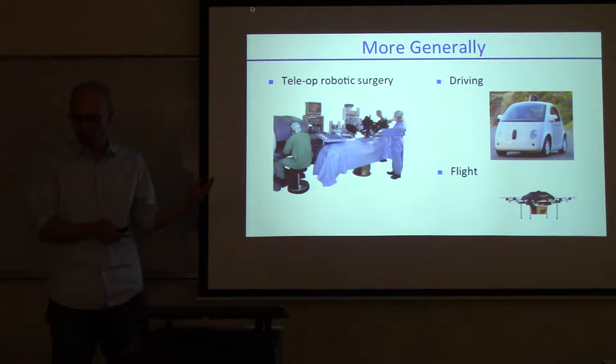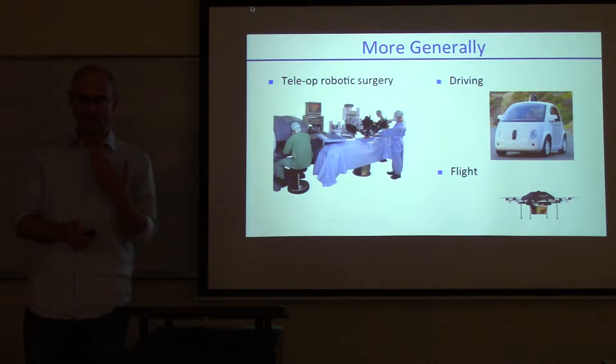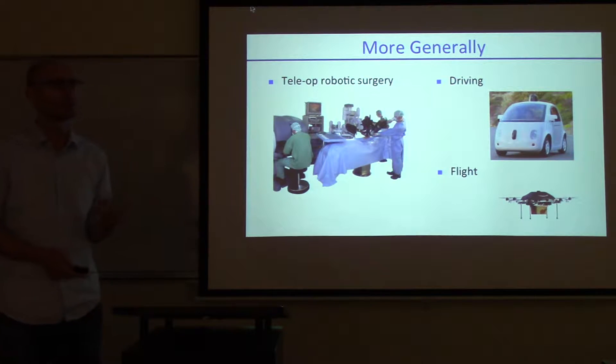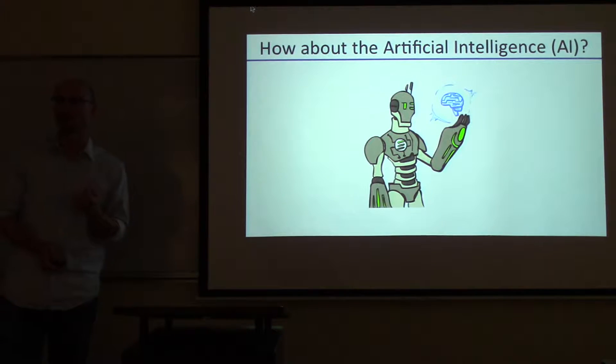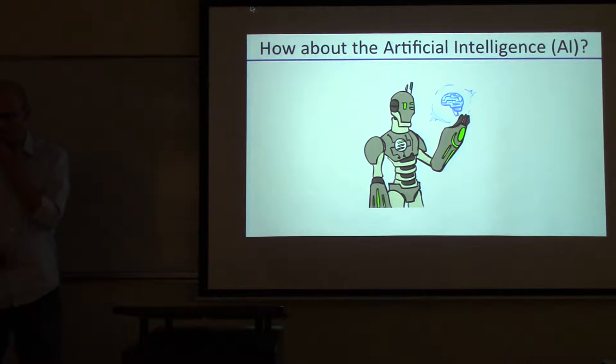All those are examples of robots where we have the physical capabilities, but we don't have the artificial intelligence to actually power these robots. There's a lot of work to be done to get there.